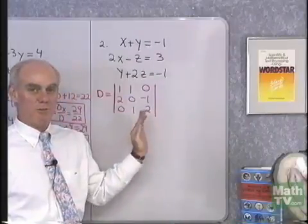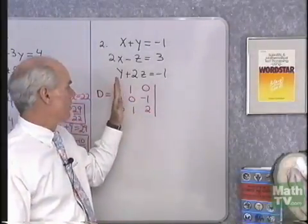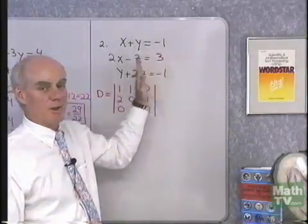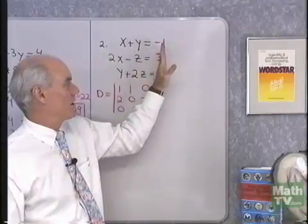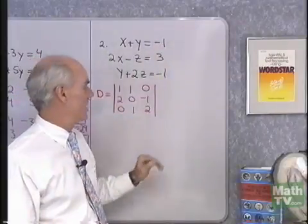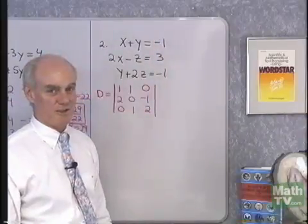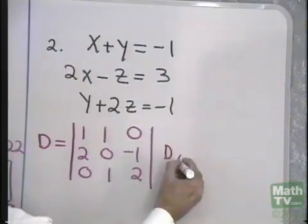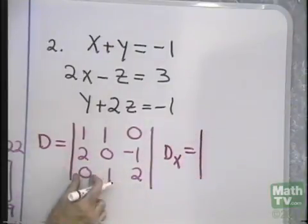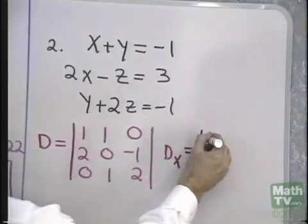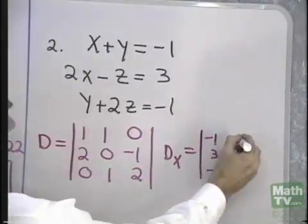Now I'm going to form 3 more determinants: D sub x, D sub y, and D sub z. D sub x is what I get when I take the coefficients of x and replace them with the constant terms. D sub y is what I get when I take the coefficients of y and replace them with the constant terms. D sub z is what I get when I take the coefficients of z and replace them with the constant terms. So let's look at D sub x — it will look just like determinant D, except instead of the coefficients of x, I use the constant terms. The rest of the determinant stays exactly the same.